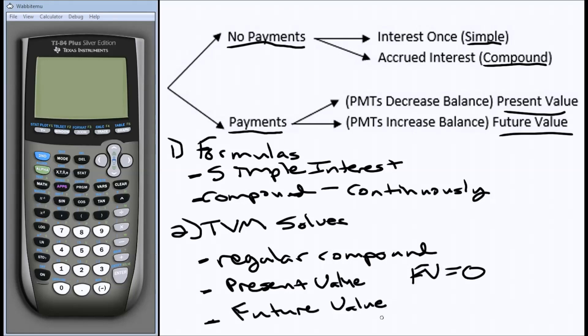If we have a future value problem where we're starting with something and we're building up to some value in the future, typically, unless it says otherwise, we know that we will start with nothing and make recurring payments to build up towards that balance in the future. Meaning that for the future value problems, the general problem has a starting balance, or a present value, of zero.